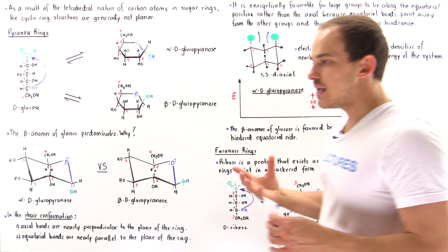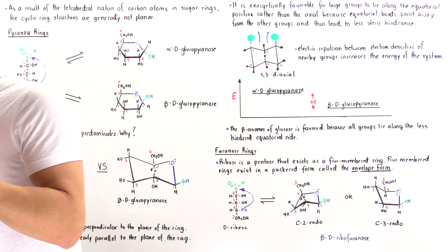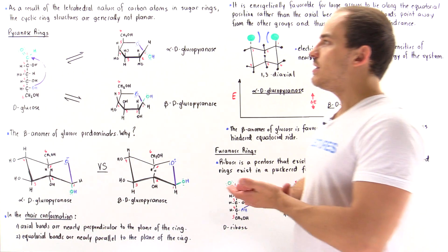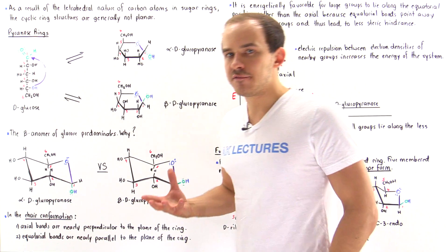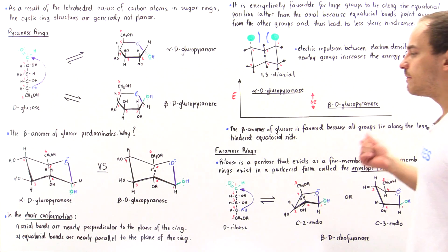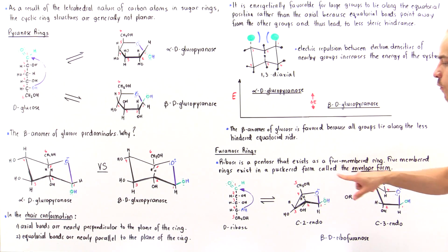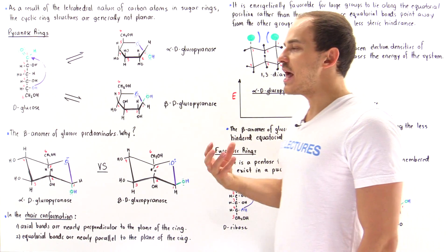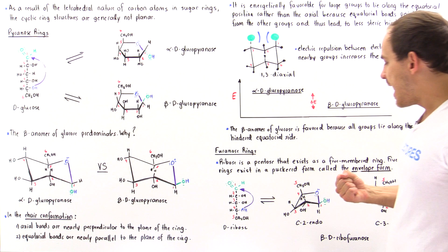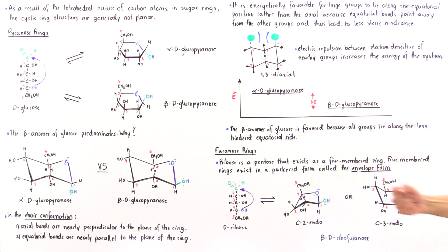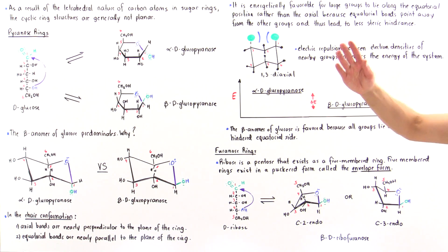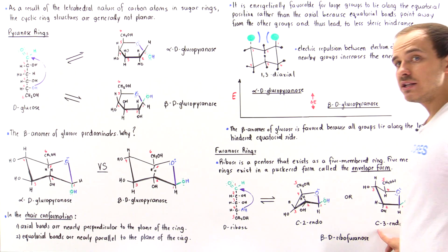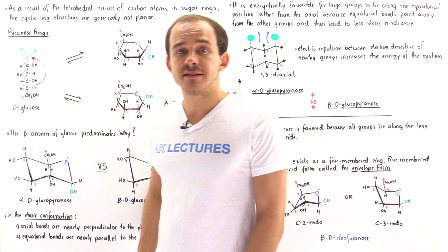Inside our body, it's the ring structures of sugars that predominate. In the case of six-membered rings, we have the chair conformation. In the case of five-membered rings, we have the envelope — the puckered form — with either the C2-endo, where the second carbon is puckered, or the C3-endo, where the third carbon is puckered.